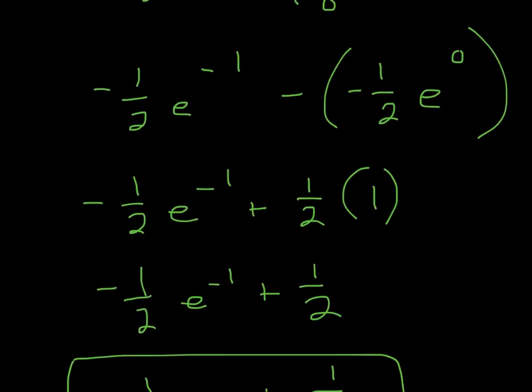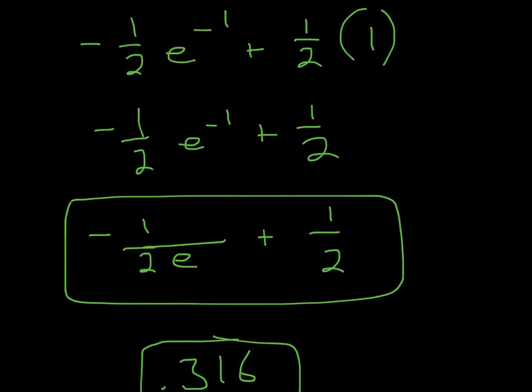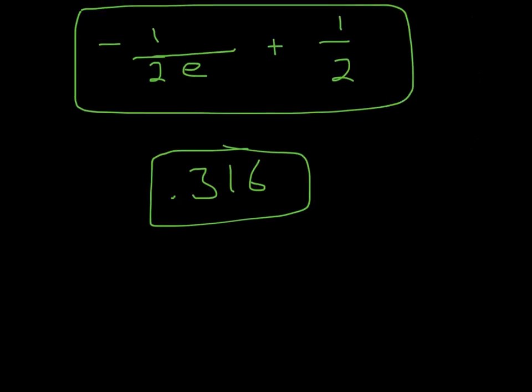So now, you go down and just simplify. So negative 1 half e to the 0, keep that the same. So anything to the 0th power is 1, so it's going to be negative 1 half, and then the negatives cancel, so it's going to be positive 1 half. So now you're left with negative 1 half e to the negative 1, plus 1 half, and if your professor or teacher wants no negative powers, you can pull that to the denominator, where you'll get negative 1 over 2e plus 1 half, and if they want it in decimal form, it's 0.316.